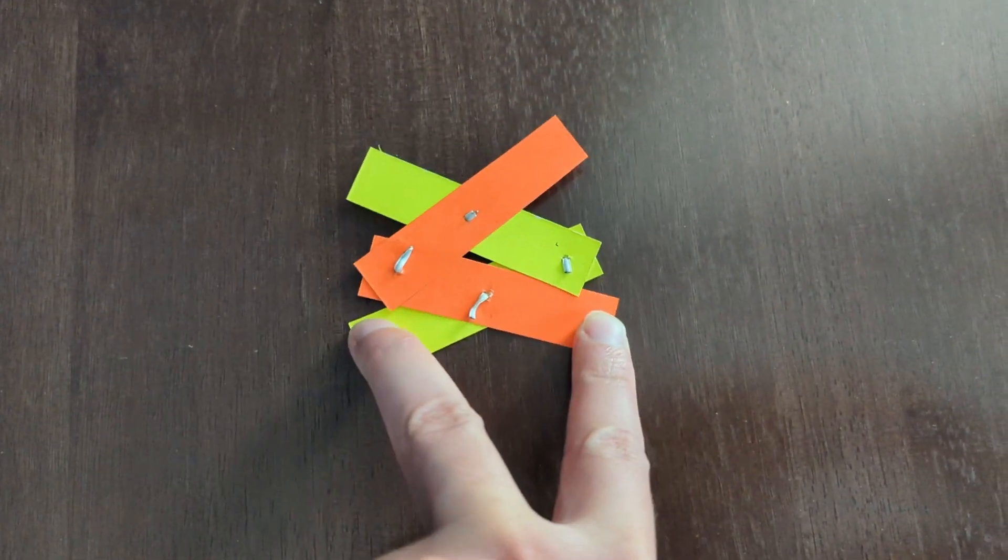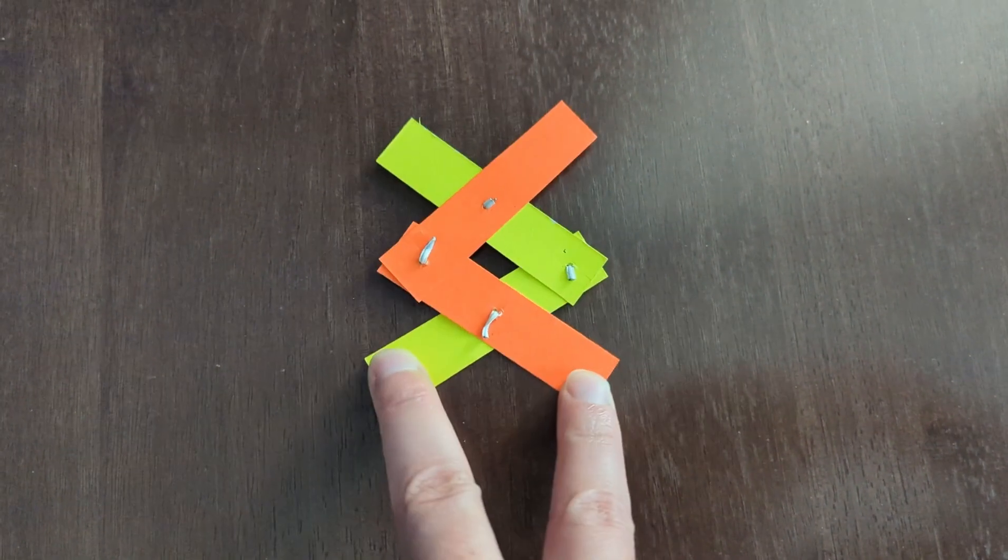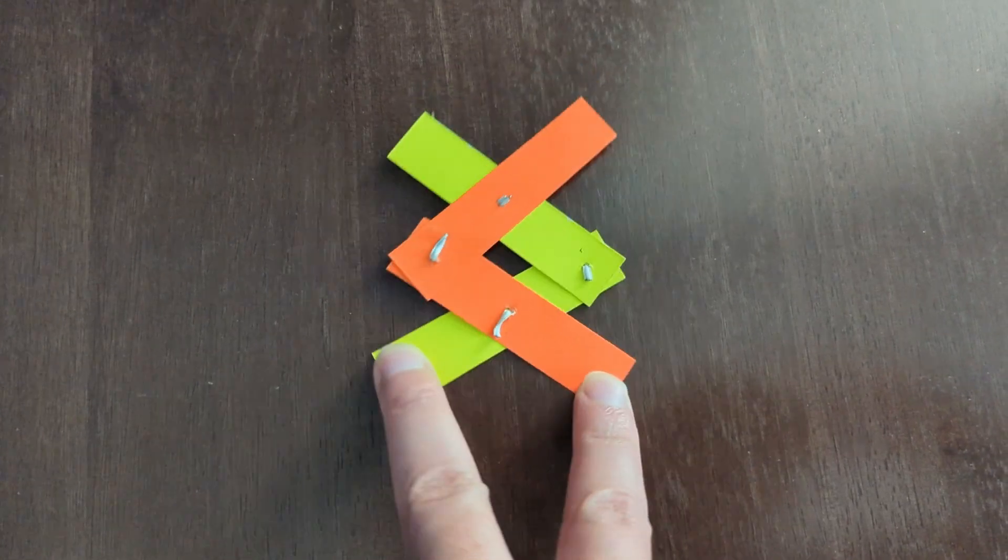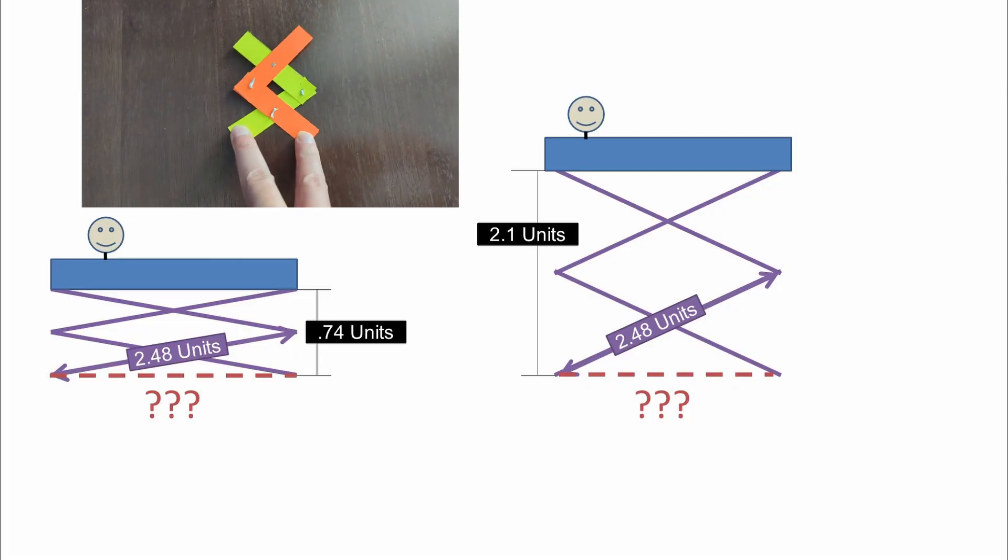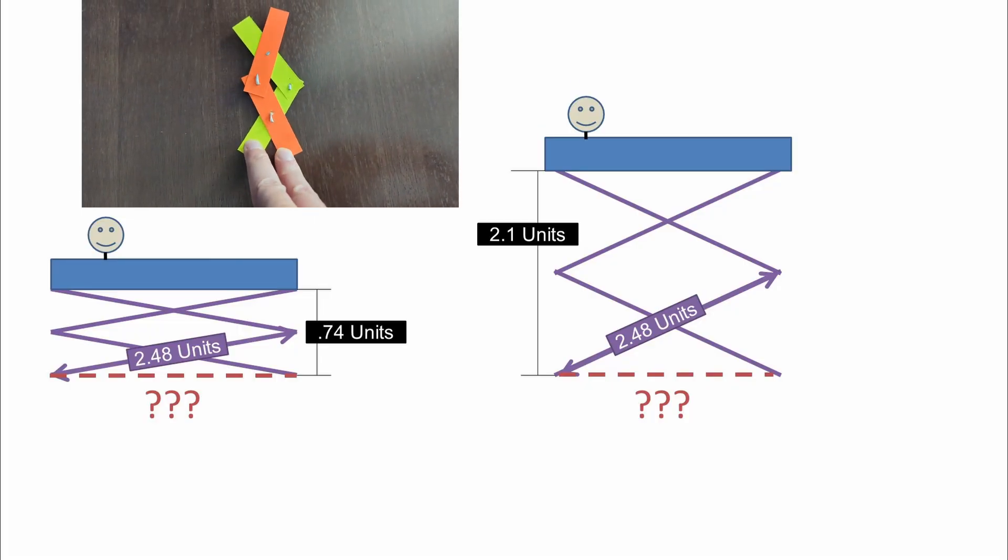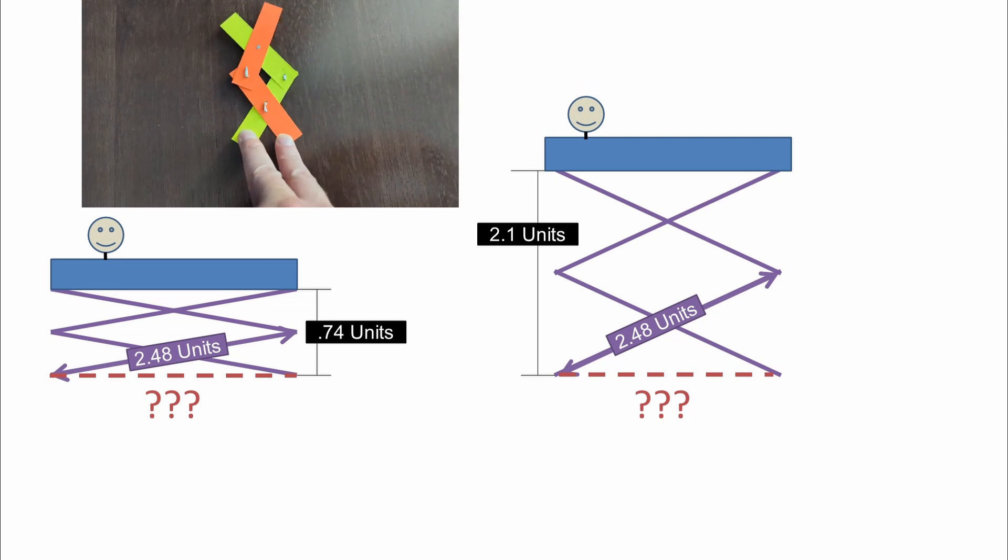I started thinking about scissor lifts and how the trigonometry behind these works for these devices. In this problem, we have a scissor lift that has a crossbar of 2.48 units long.